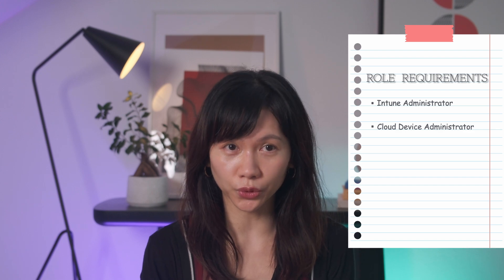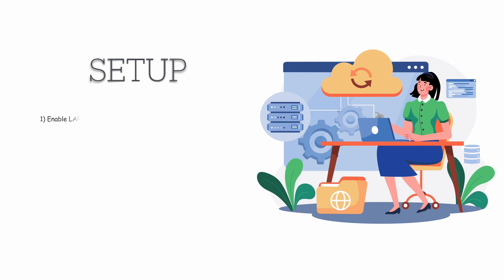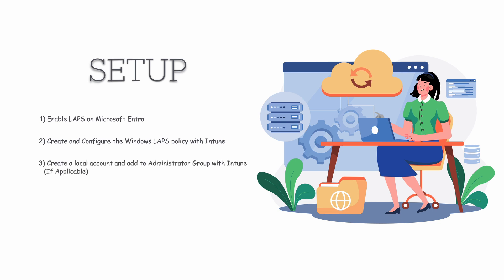Before we start, you need a minimum of the Intune administrator and cloud device administrator role. If you configure Windows LAPS to manage a custom local account, you must ensure that the account is created because Windows LAPS doesn't create the account — which I will show how to do later in this video. Here's the breakdown of the Windows LAPS setup: first, enable LAPS on Microsoft Entra; next, create and configure the Windows LAPS policy with Intune; and last but not least, create a local account and add it to the administrator group if you are not using the built-in administrator account.